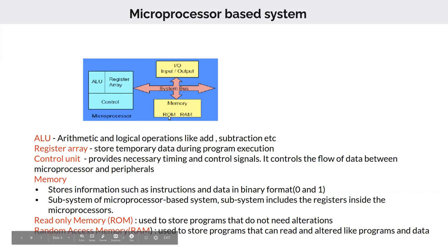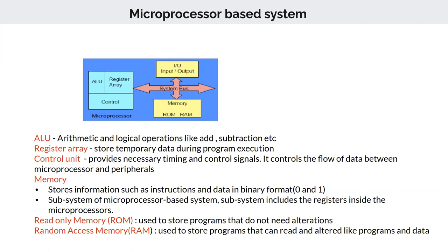Memory is a subsystem of the microprocessor and includes two types: ROM (Read Only Memory) and RAM (Random Access Memory). RAM is referred to as primary memory or main memory. ROM is non-volatile memory, meaning even when the power goes off, the data stored there is retained. RAM is volatile memory — when power is cut, everything stored there is lost.